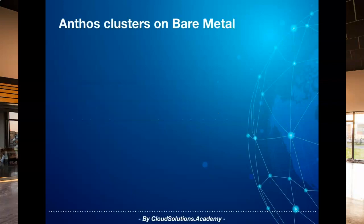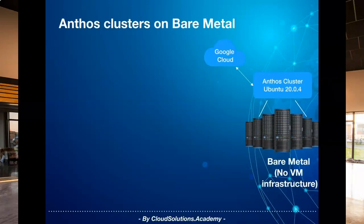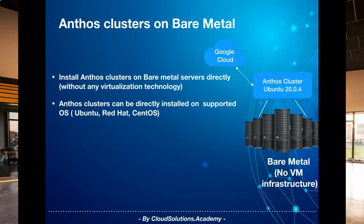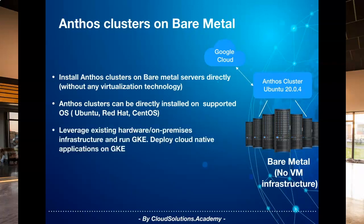So what is Google Anthos clusters on bare metal? Google Anthos clusters on bare metal basically allows you to install Anthos clusters directly on bare metal servers running Linux operating systems such as Ubuntu, Red Hat and CentOS without the overhead of any virtualization technology. Anthos clusters on bare metal provides the flexibility to enterprises to run Anthos Google Kubernetes engine clusters directly on their own environment or on-premises data center, deploying and running cloud native applications directly on GKE clusters on supported hardware and operating systems.